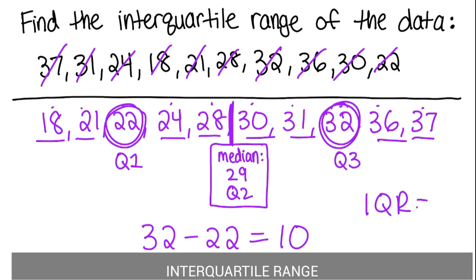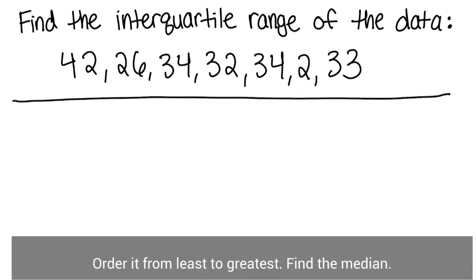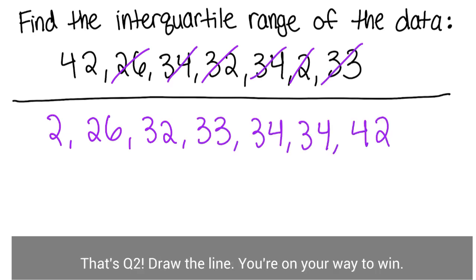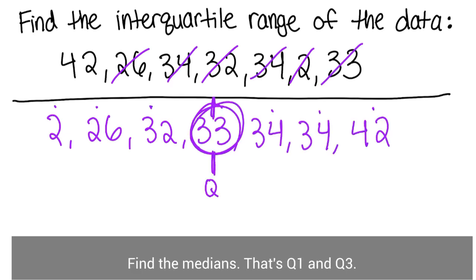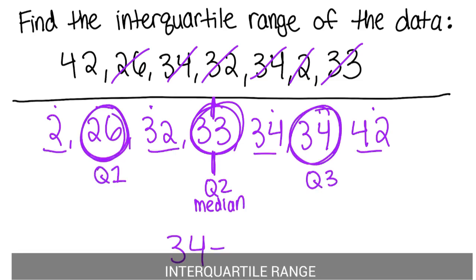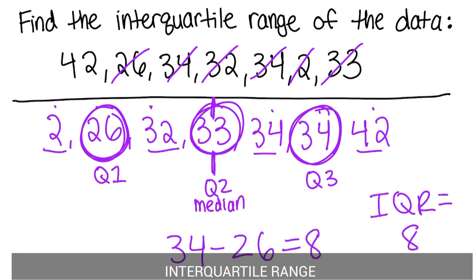Order it from least to greatest, find the median — that's Q2. Draw the line, you're on your way to win. Find the medians, that's Q1 and Q3. Subtract them, it's easy. You just found the key to the interquartile range.